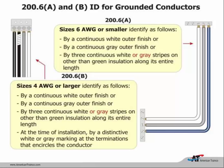In 200.6, identification for grounded conductors, they added a small but important change. For size 6 or smaller, it must be a continuous white or continuous gray—they're not allowing field identification; it has to be continuous. They previously allowed three continuous white stripes and have now added three continuous gray stripes on that conductor. For number 4 or larger, we are still allowed to identify the conductor in the field at the time of installation, and three continuous white or gray stripes are also allowed. Manufacturers now make wire in any color we want, making re-identification increasingly a moot point.